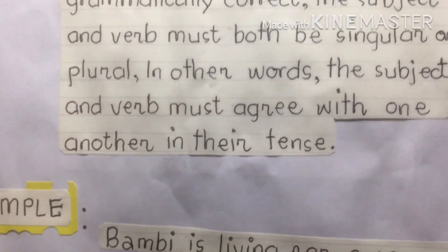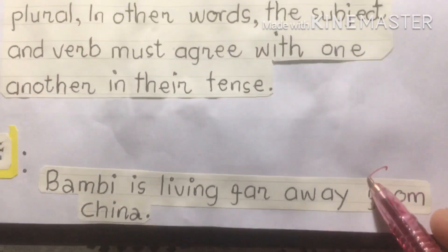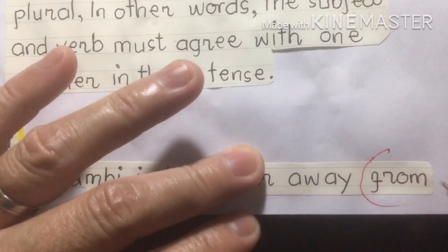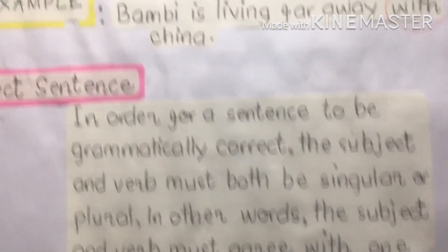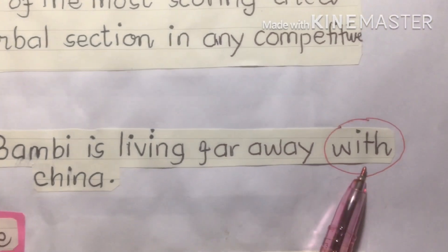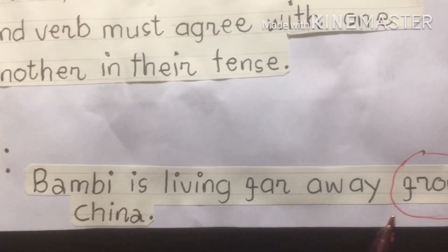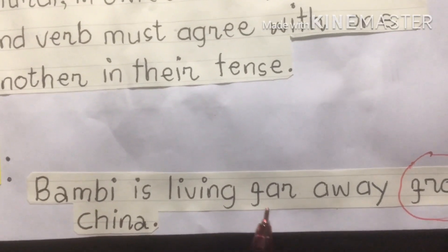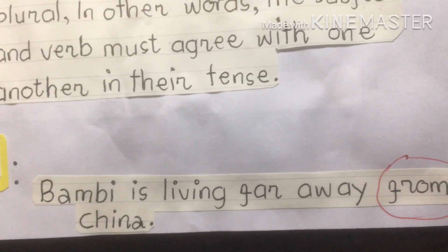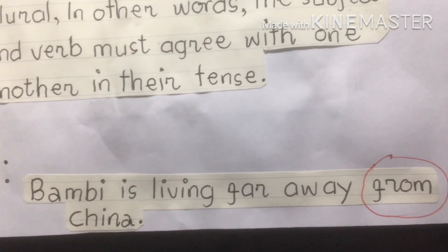The correct example is: 'Bambi is living far away from China.' The word 'with' has now been changed to 'from.' So 'from' is the correct word — 'Bambi is living far away from China.' That is the correct sentence.